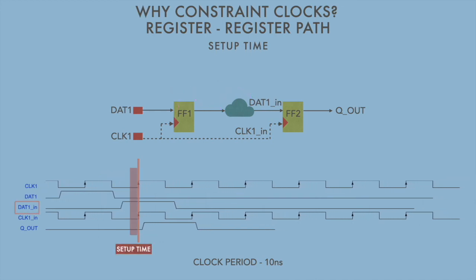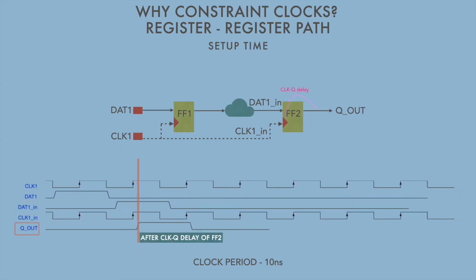dat1_in is stable before the setup time of FF2, hence again it is reliably captured by FF2. And now after the clock to queue delay at FF2, the output gets asserted at the pin Q_out. Now you could see that the circuit works fine for a clock period of 10 nanoseconds.